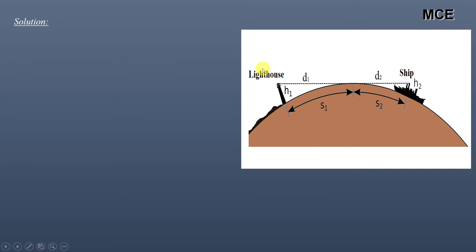You can see the figure for this problem. The lighthouse has height h1 and the observer standing on the deck of the ship has height h2. The distance of the lighthouse from the visible horizon is d1 and distance of the observer from the visible horizon is d2. We have to find the distance between this lighthouse and the ship.